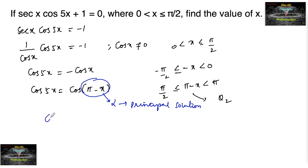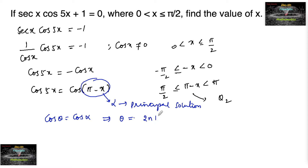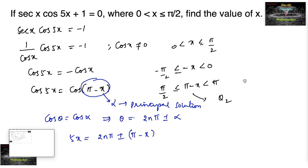Now it is in the form cos θ = cos α. By the general solution, we can write θ = 2nπ ± α. Here θ = 5x, so 5x = 2nπ ± (π - x), since π - x belongs to the principal range.